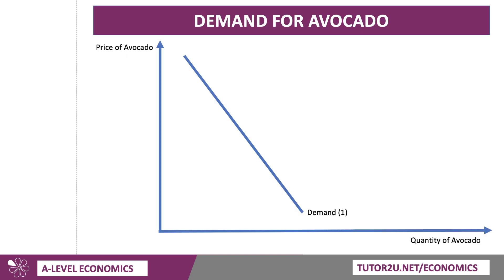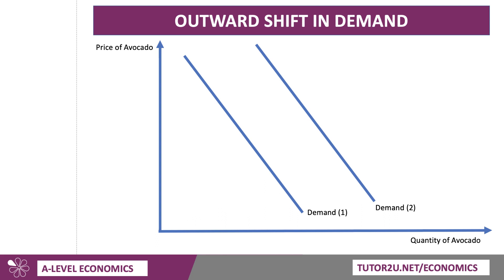Let's take an example — the market for avocado. There's been strong growth in demand in many countries due to the supposed health benefits. So let's look at the effect of an outward shift in demand for avocado. I've drawn the demand curve downward sloping and fairly inelastic, reflecting people's willingness and ability to pay. The key thing is that demand has shifted out, and that will be the case for all of the diagrams to follow.